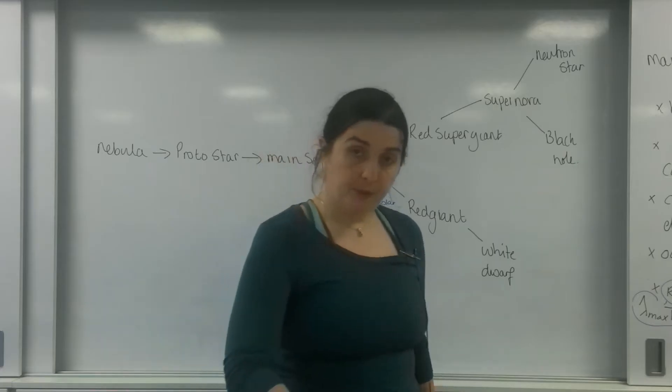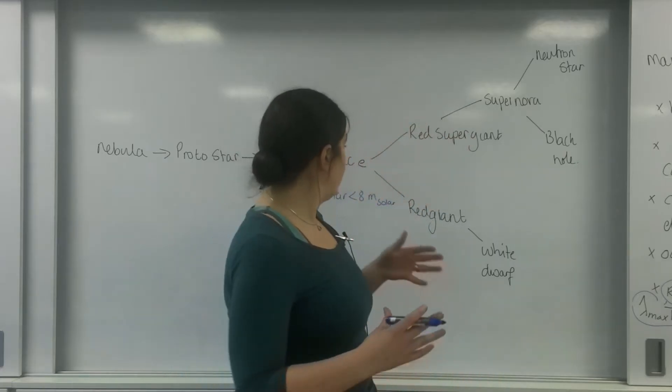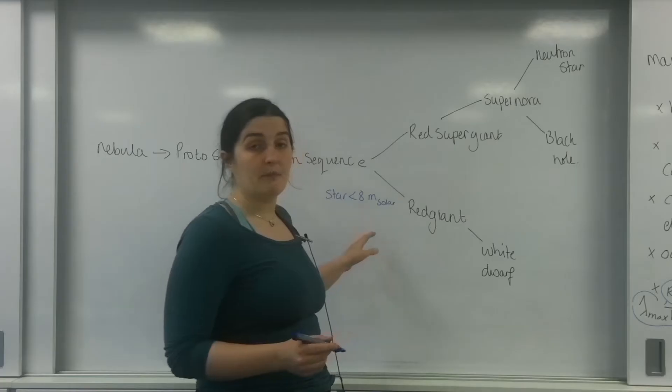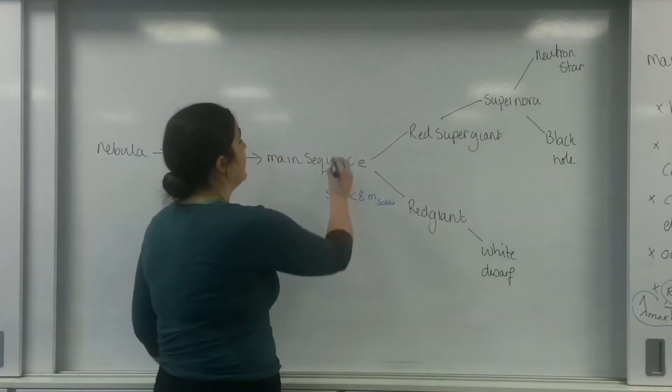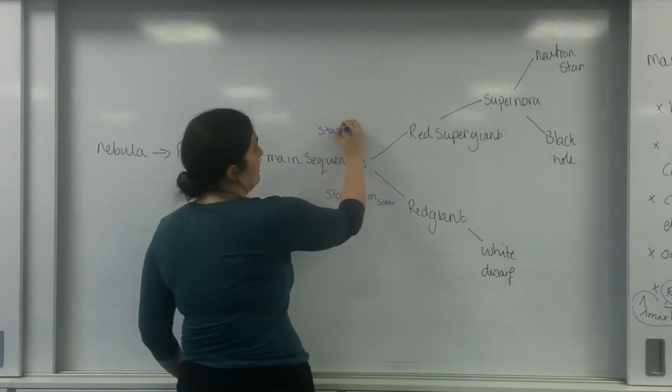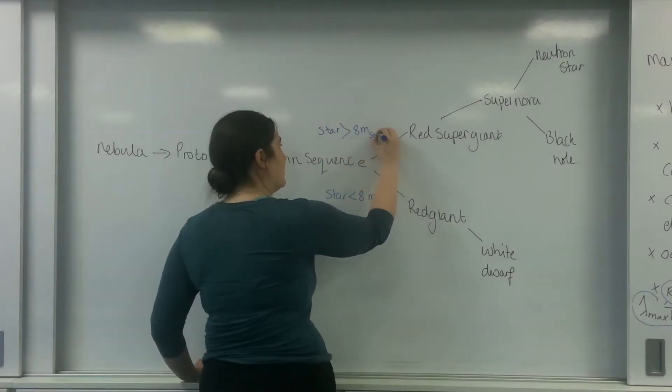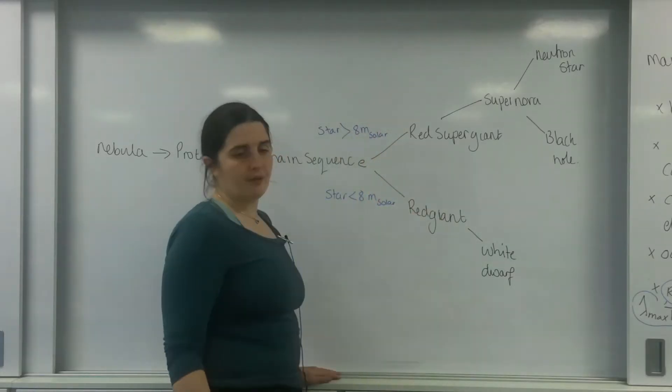In my previous video I spoke about the fact that the star has to be less than 8 solar masses to go the red giant route. If the star is greater than 8 solar masses, it will go the red supergiant route.